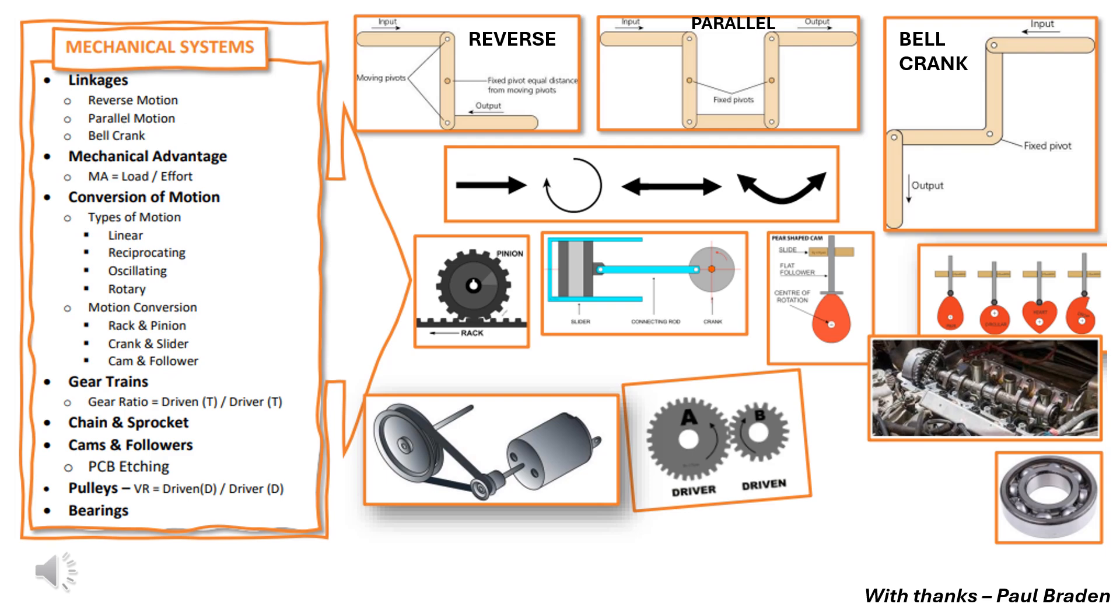One of the first things that we'll need to discuss are linkages. You will have remembered three of these linkages from the content you've learned so far. We have reverse, parallel and bell crank. A linkage is used to change the size of a force or the direction of motion or even the type of motion. They're constructed by joining links and rods and levers and they're connected via pivots to allow or restrict their movement.